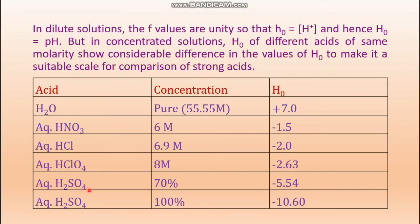For 70% aqueous sulfuric acid — approximately 12.6 molar — minus log(12.6) = −1.1, but H₀ equals −5.54. For 100% sulfuric acid, which is 18 molar, minus log(18) = −1.26, but H₀ equals −10.60. Activity coefficients play a vital role here, causing these values to change drastically.